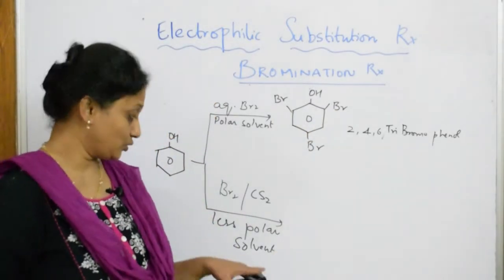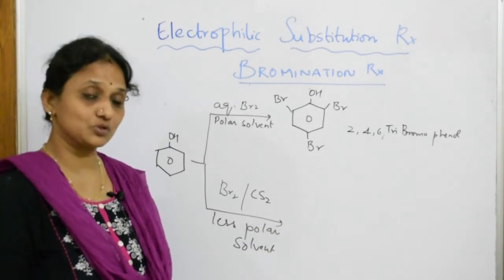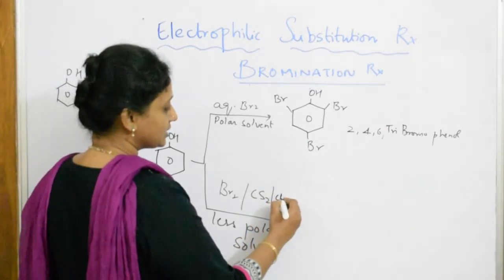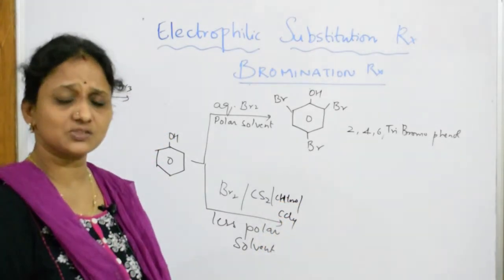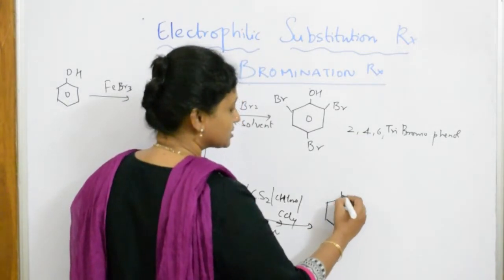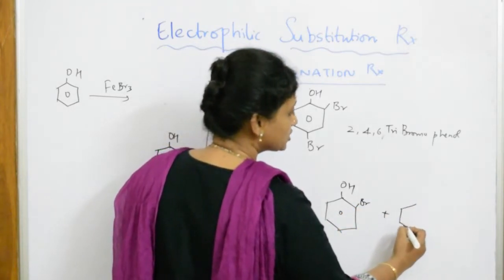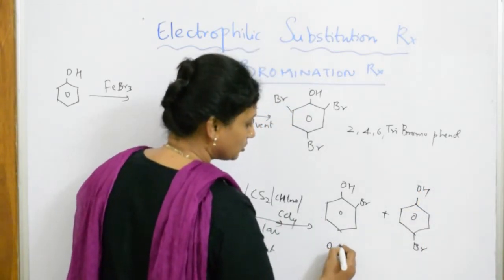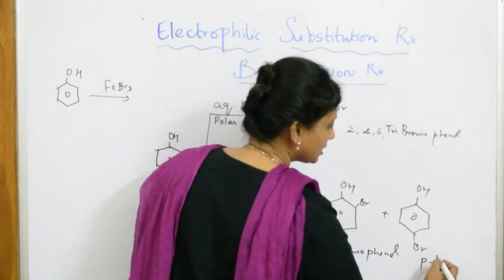But as soon as you see less polar solvents like carbon disulfide, chloroform, or carbon tetrachloride, the product you get is two different products from the phenol ring — you may get either the ortho product or the para product: orthobromophenol and parabromophenol.